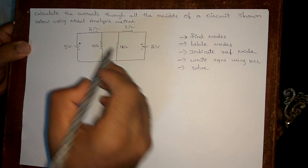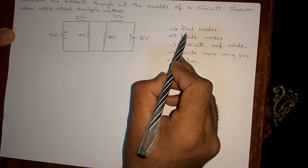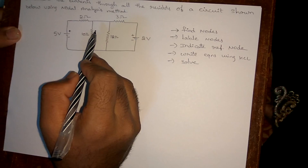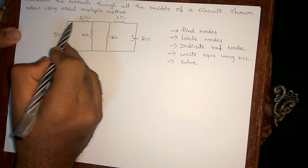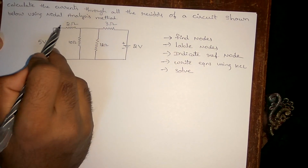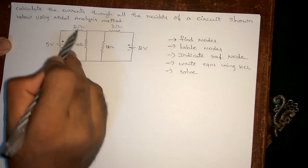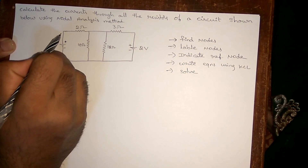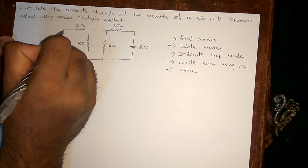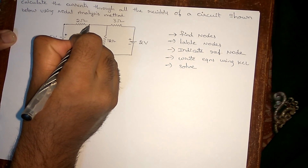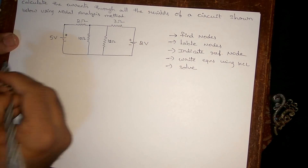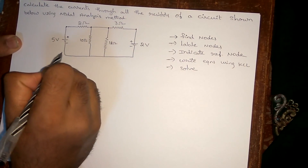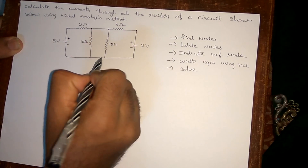First of all, you have to find the nodes. A node is nothing but a point where two or more elements are joined together. Here the elements are resistors and voltage sources. Where a resistance and a voltage source are joined, that is a node. Similarly, wherever two elements are joined, those are also nodes.